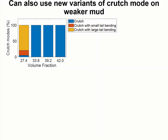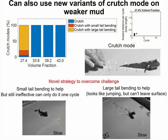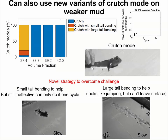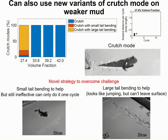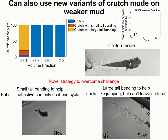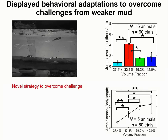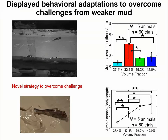The animal also displayed new variants of the crutch mode to help move on weaker mud. The first variant was where the animal uses a small tail bending to help move forward, but this is still ineffective because it can only do so for one cycle. The second variant is where the animal uses a large tail bending to help it move forward, similar to jumping but without leaving the surface. We also found that the mudskipper displayed behavioral adaptations, using jumps to overcome challenges on weaker mud. This happens occasionally on stronger mud at 39.2% and 42% solid volume fraction, but much more frequently at 33.8%. However, on the weakest mud, jumping is less likely because the mud adheres to the animal making it difficult to jump.